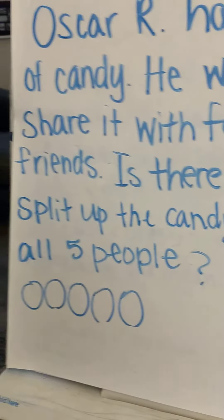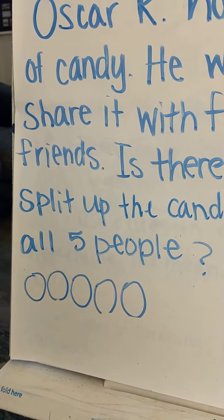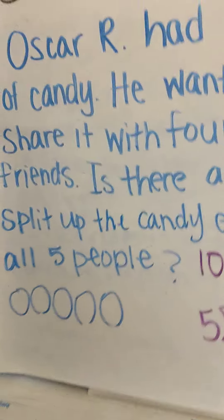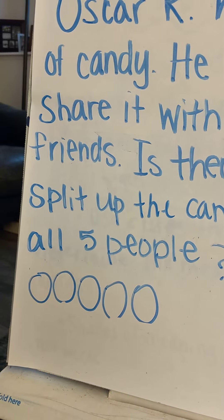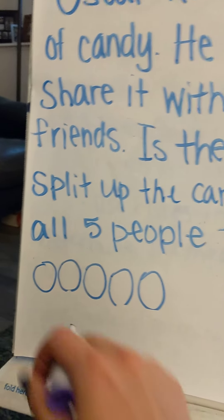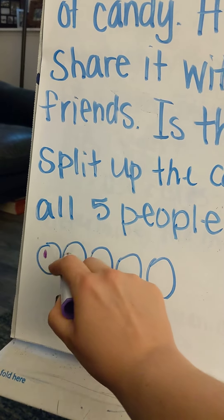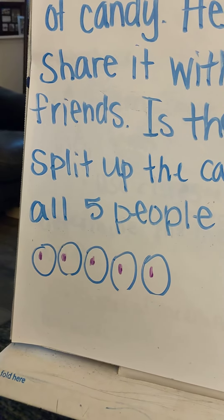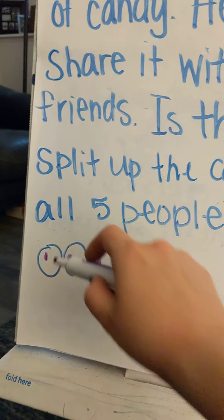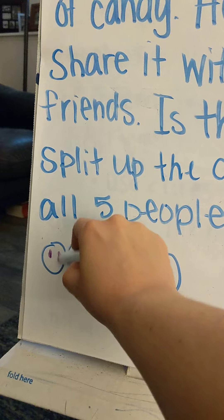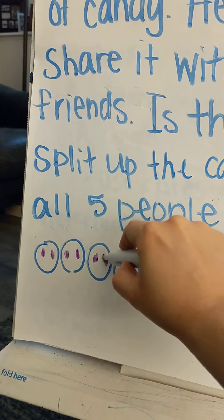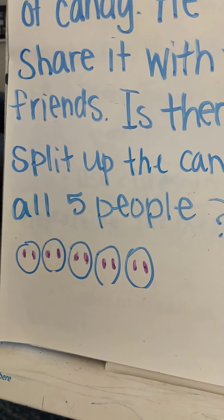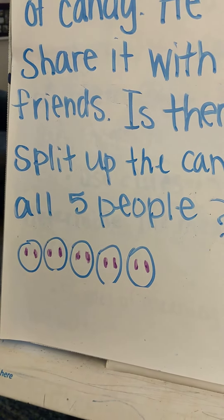We want to know if I have five people — there are my five people — if I can divide it up evenly. One way that makes it real easy to do this is just to count out 10 until everybody has the same amount. So I'll show you what I mean: 1, 2, 3, 4, 5. Have I passed out all my candy yet? Nope, I need to keep passing it out. 6, 7, 8, 9, 10. Now it's all passed out and everybody has the same amount.